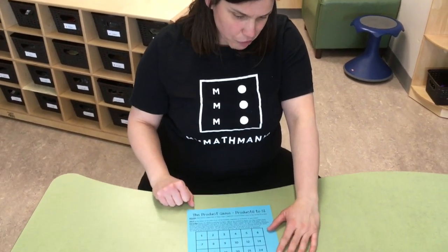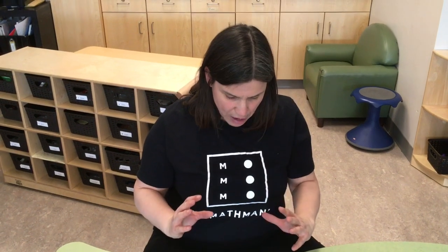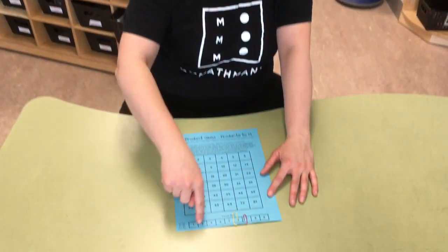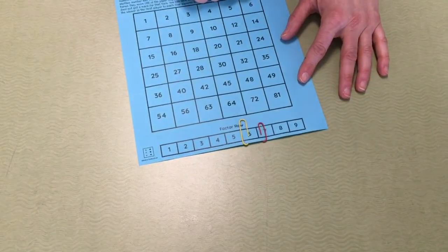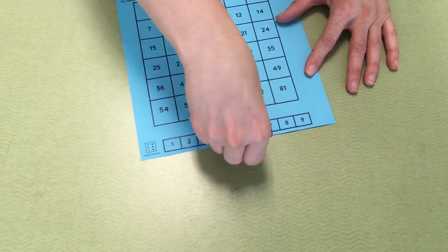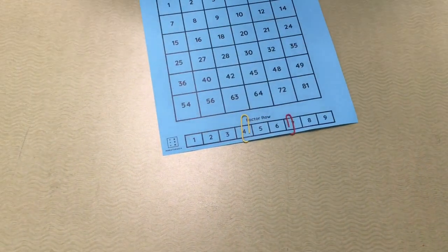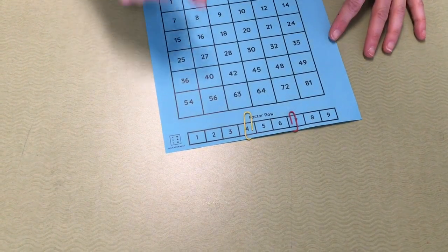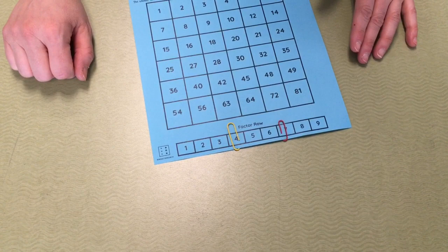This is a great game for practicing multiplication facts and it also involves a lot of strategy. How this game works is at the bottom you'll see there's a factor row with two paper clips. The first player gets to decide what factors they want to put them on and then place their bingo chip or counter on the product. So if we have them on four times seven, we know that four times seven is 28, and the first player could place there.